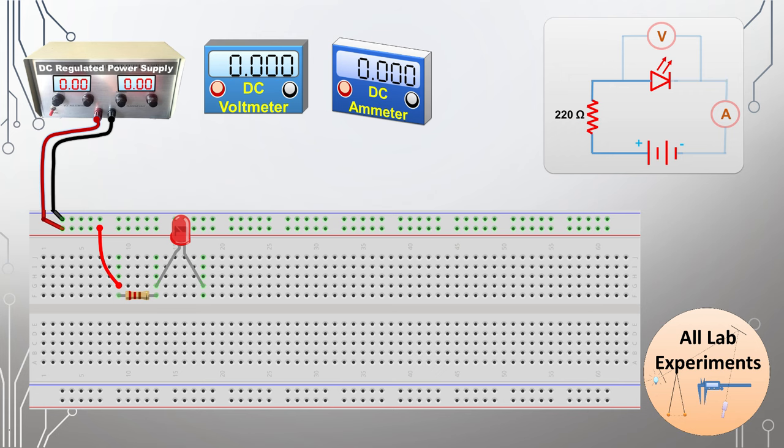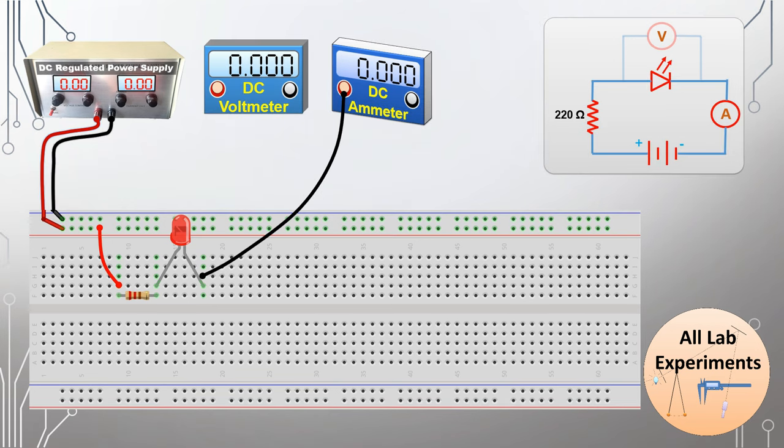After that, we connect the N side to the DC ammeter. To complete this loop, we connect the other end of the ammeter to the negative terminal of the power supply. In this way, we have completed one part of our circuit.